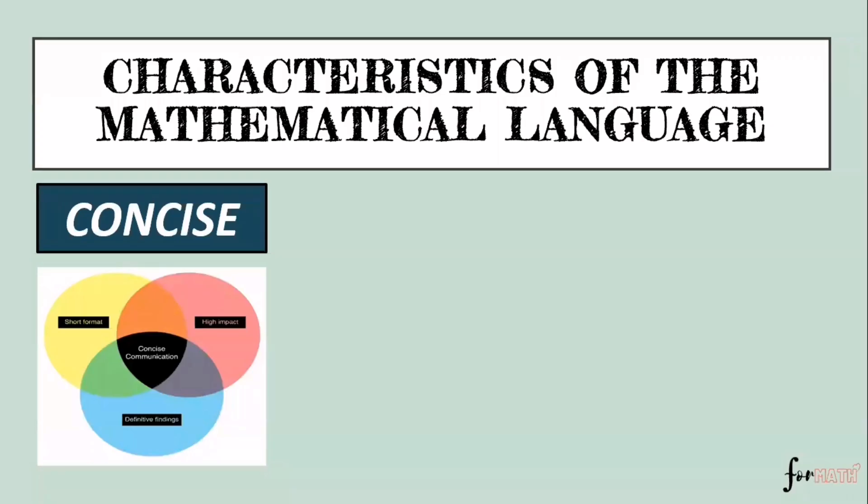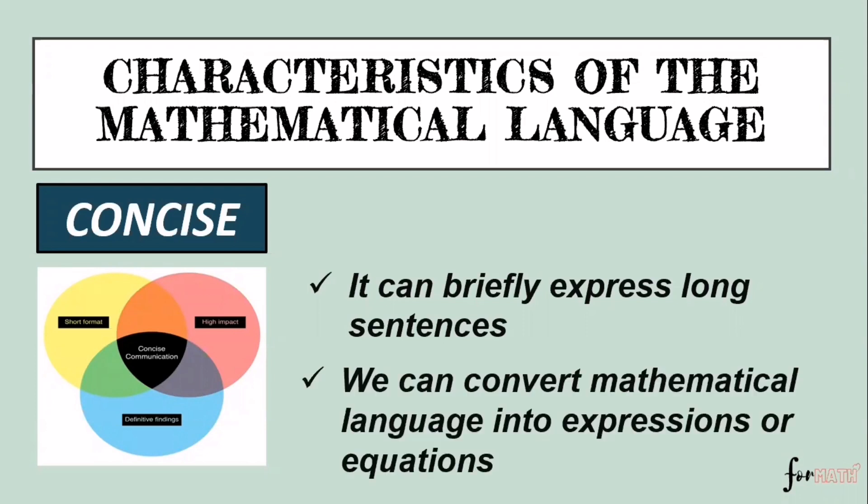Being concise, it can briefly express long sentences. We can convert mathematical language into expressions or equation. Being concise means it is able to write or say things briefly. For example, the sum of a number and three. Instead of saying the sum of a number and three, we can write it as x plus three. X means our unknown number, or this 'a number' is x, and then we have three, and then the operation involved is sum. Sum means total. What operation is involved when we say sum or total? We have plus, so we have x plus three.